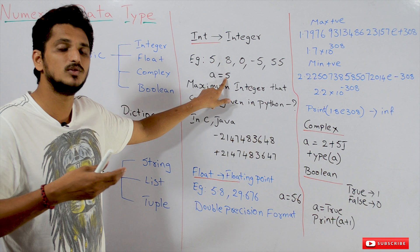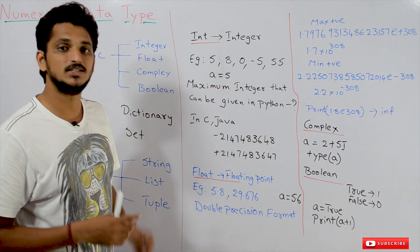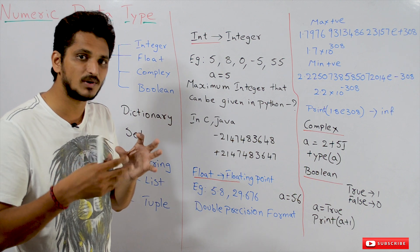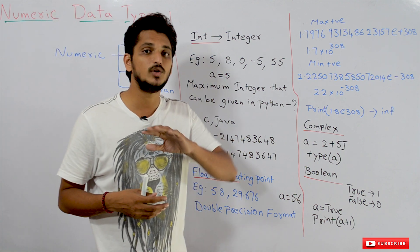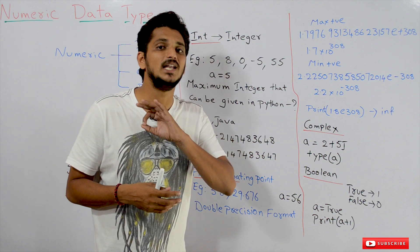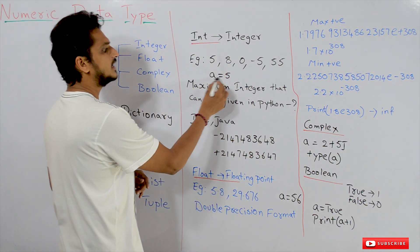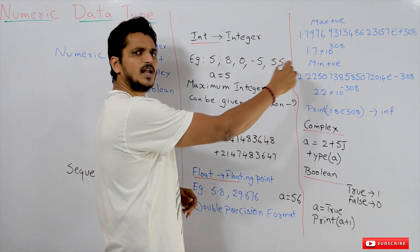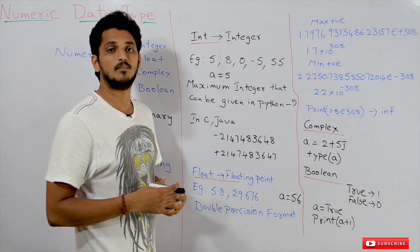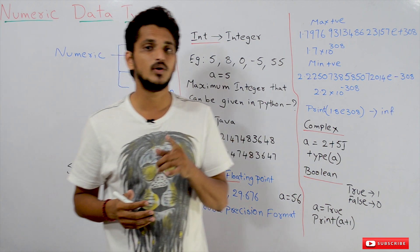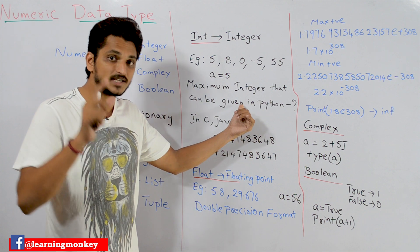What is the maximum integer value that we can assign to A in Python? Is there any limit for assigning the maximum value? No. In Python this is very important — we do not have any limit. We can assign any value, for example A equal to 9999999999109. Yes, we can assign it. But in C and Java we do not have that flexibility — we have some limit.